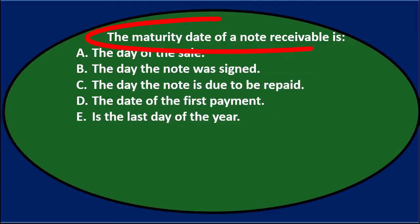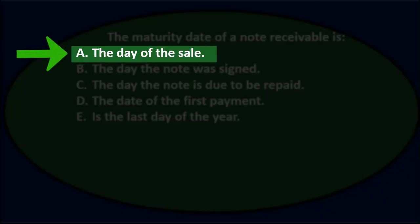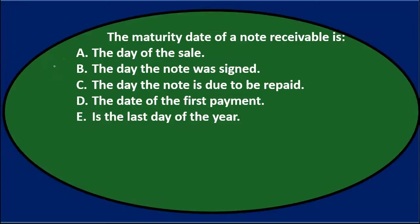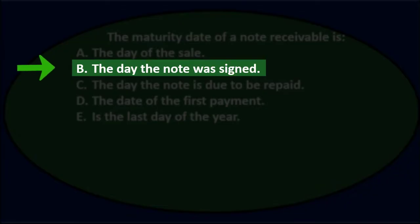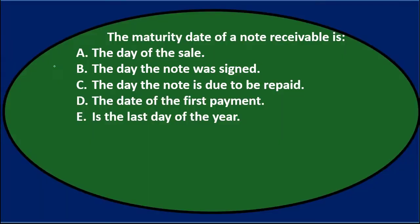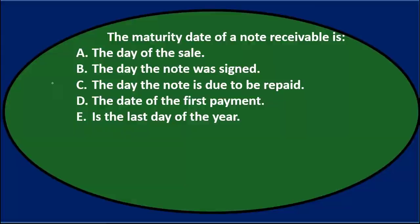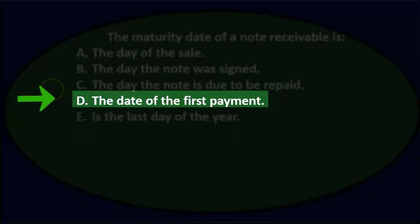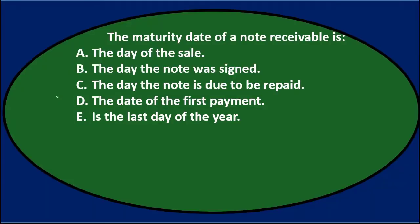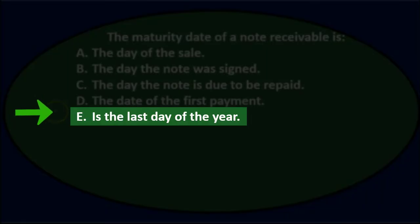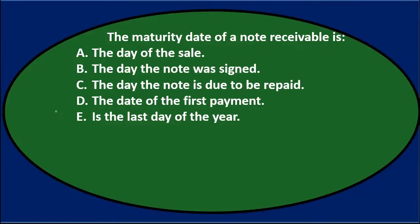The maturity date of a note receivable is: A, the day of the sale. B, the day the note was signed. C, the day the note is due to be repaid. D, the date of the first payment. E, the last day of the year.